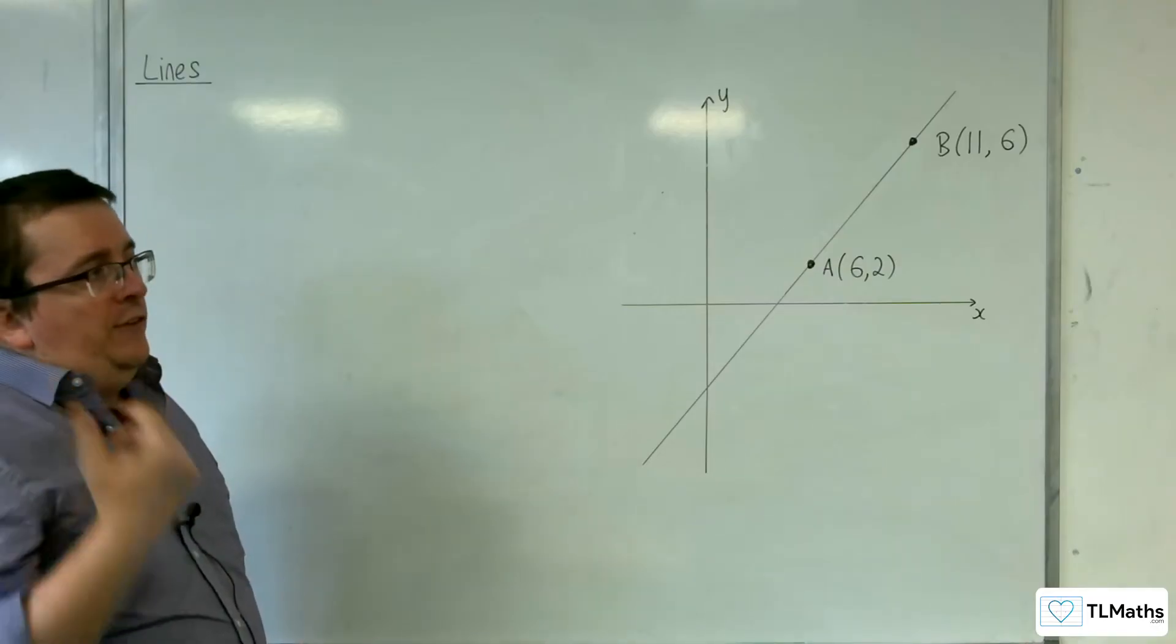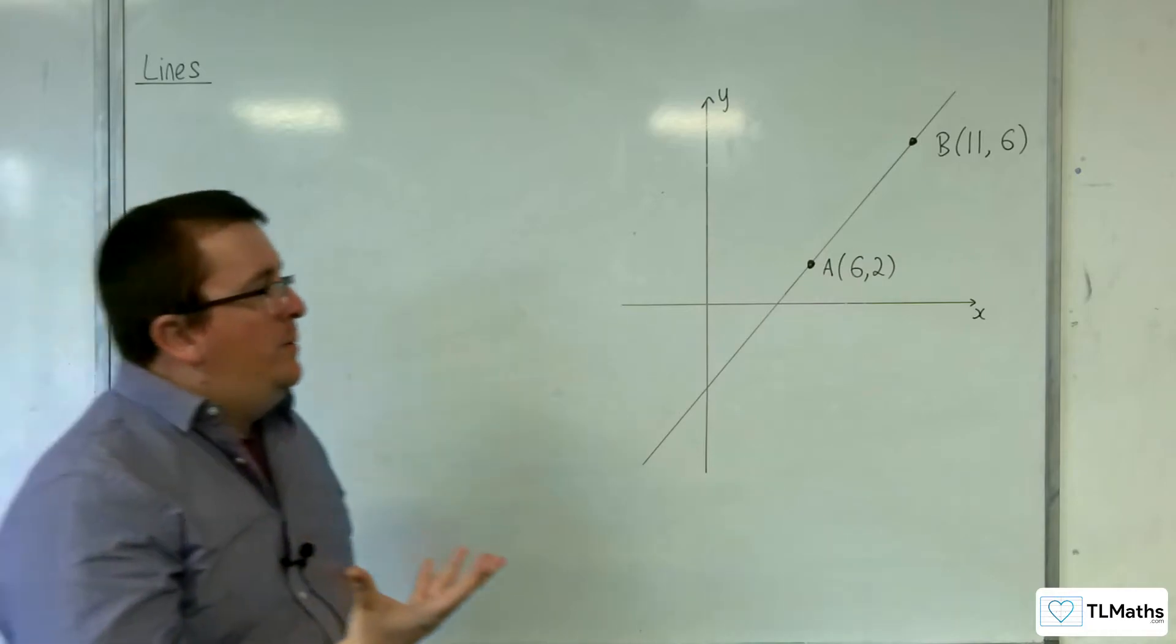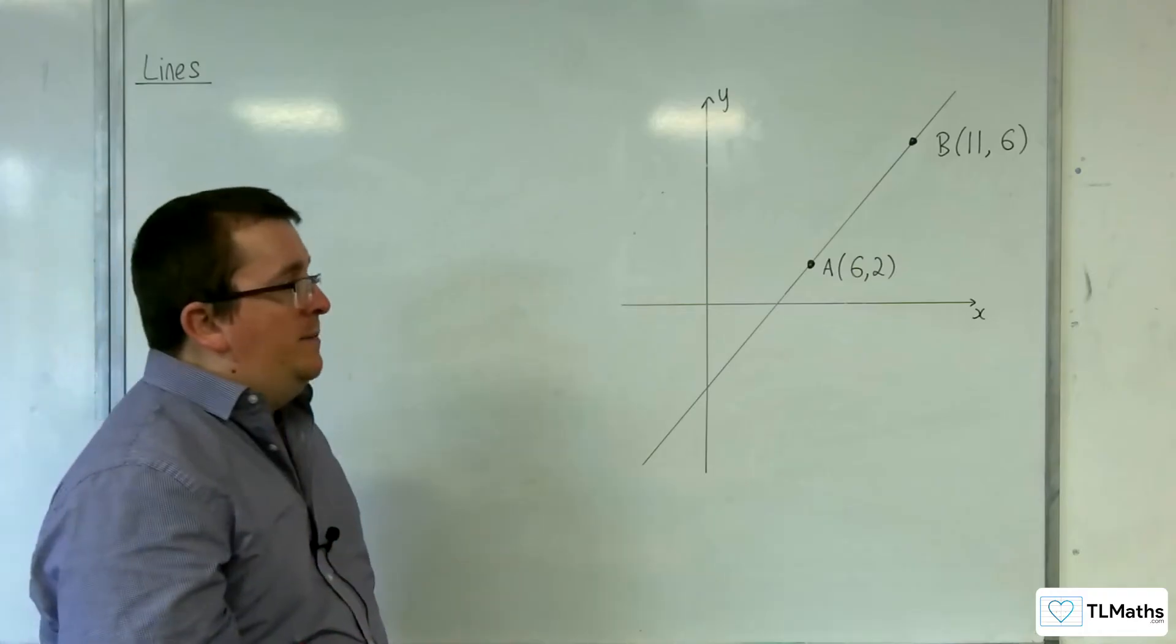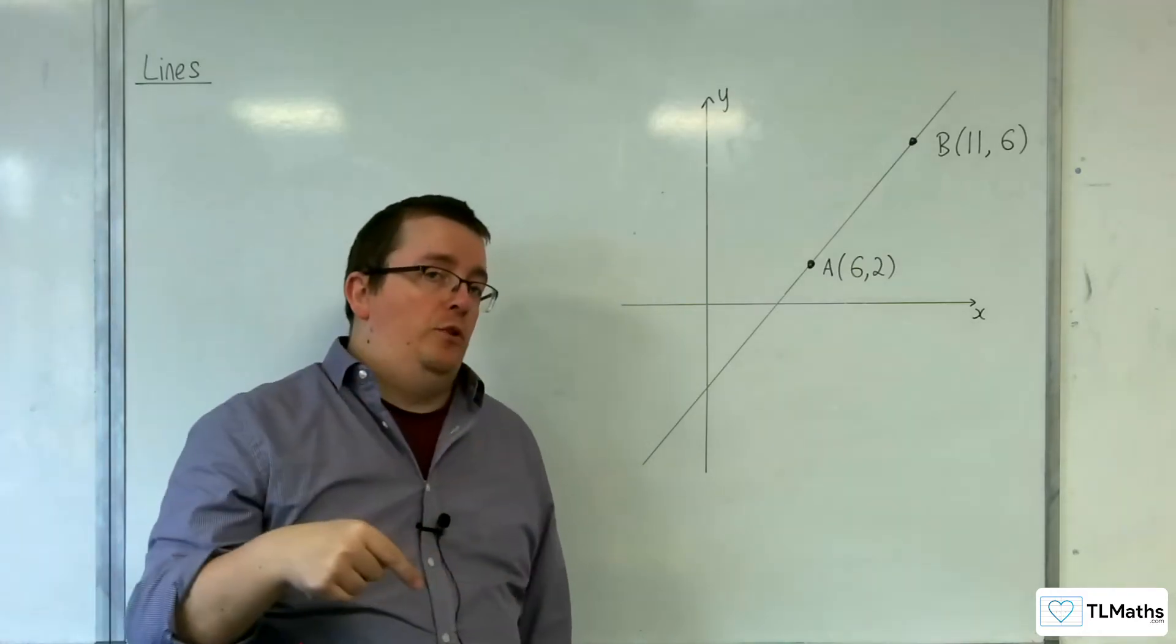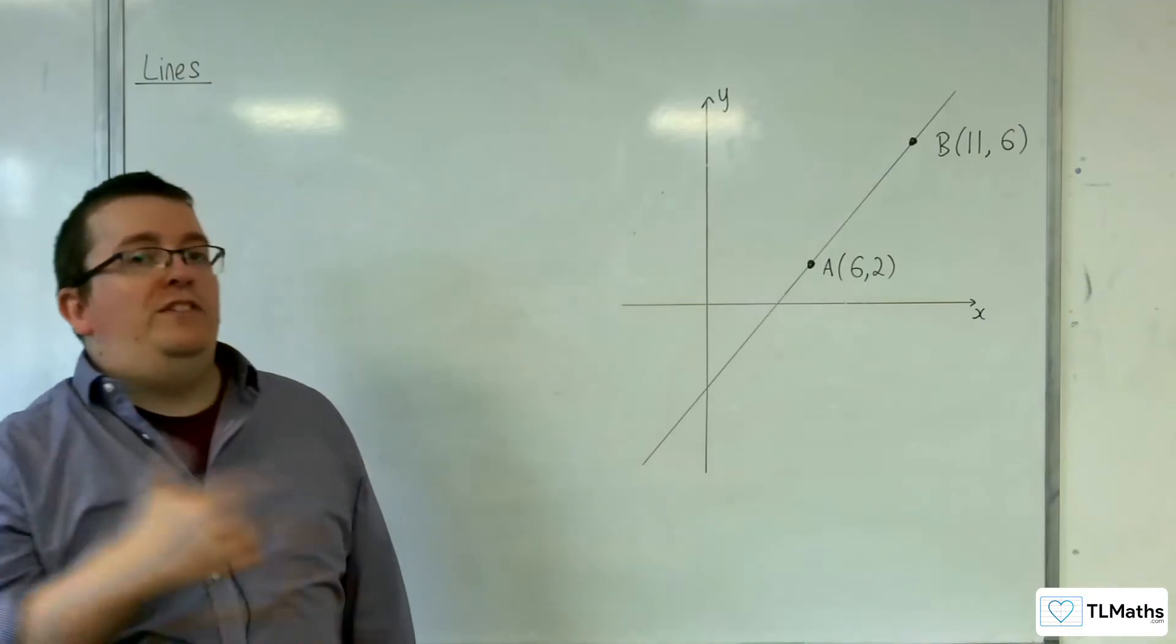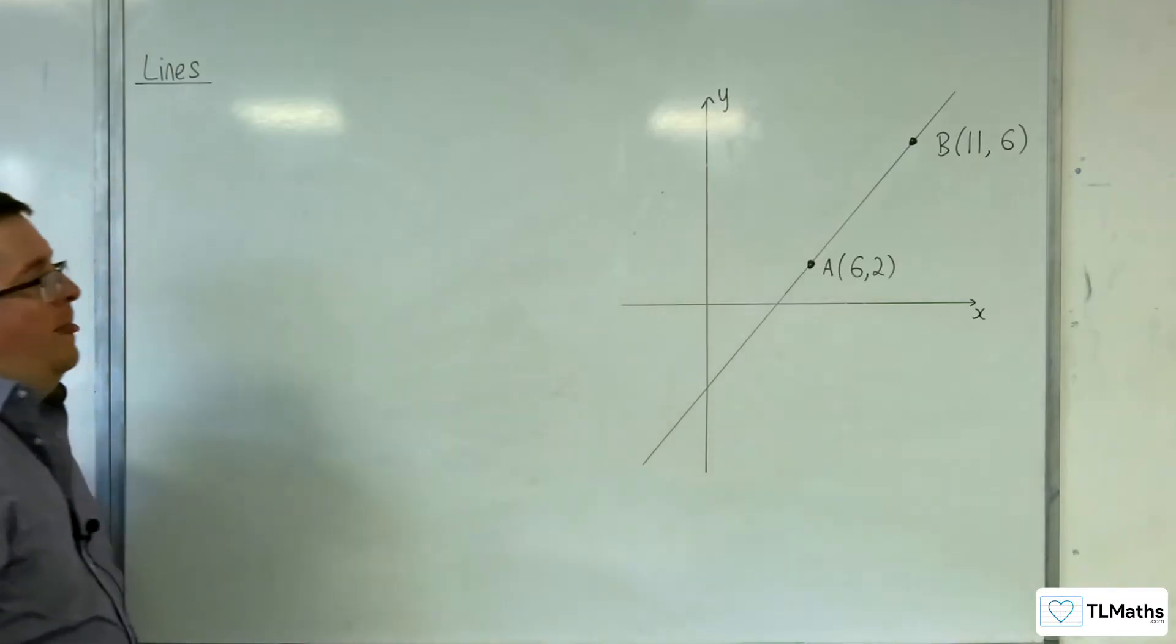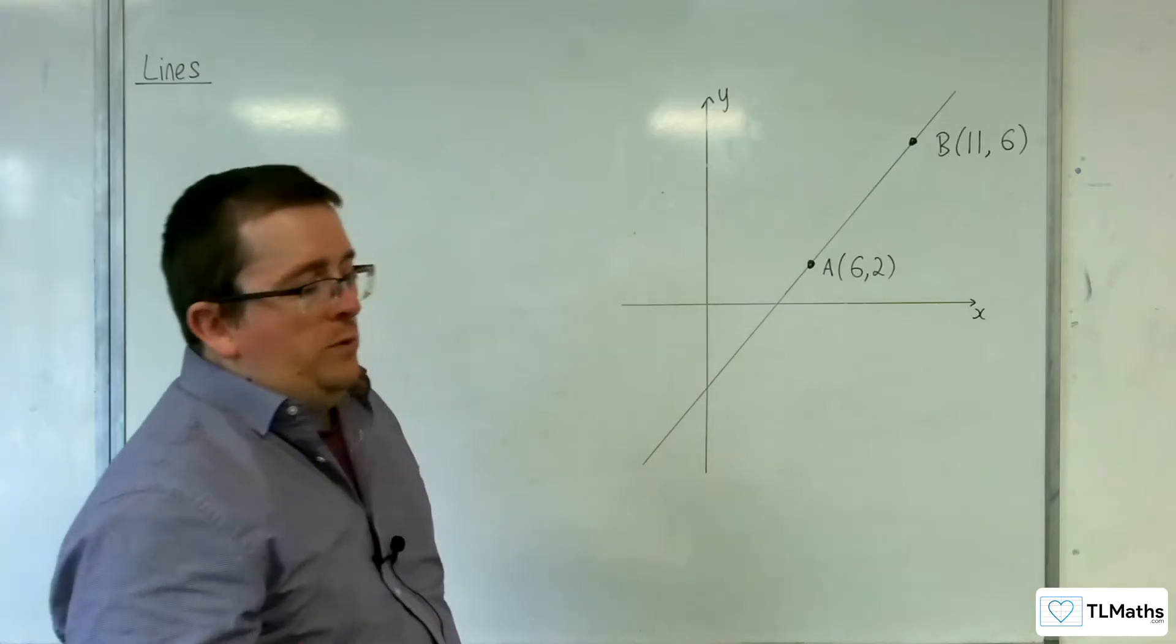Now, if instead we used vectors, the whole point as to why we would use vectors is because if we can describe that line with vectors, then we could trade it up to 3D coordinates. And finding the equation of a line in 3D coordinates is not something that we've met before. So that's the pathway that we want to take.